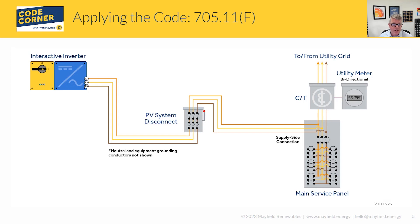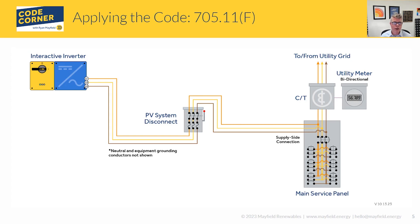Here's that image I mentioned. In the 2020 version of the code, we had this same type of graphic with a distance shown — a maximum distance between the supply side connection and the PV system disconnect, depending on residential or commercial. That's gone now in 2023. Keep that in mind when working with this, and have a conversation with your AHJ to make sure they agree on where that location is and that it's close enough to the point of connection.